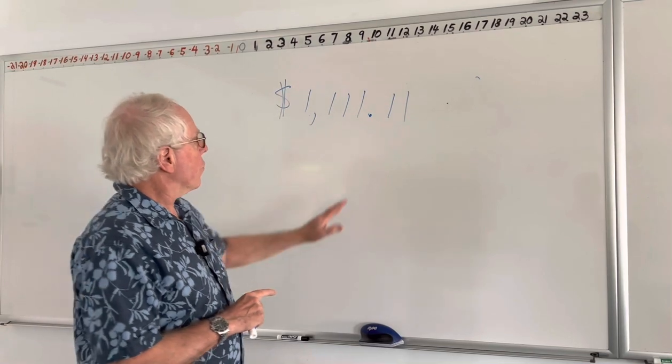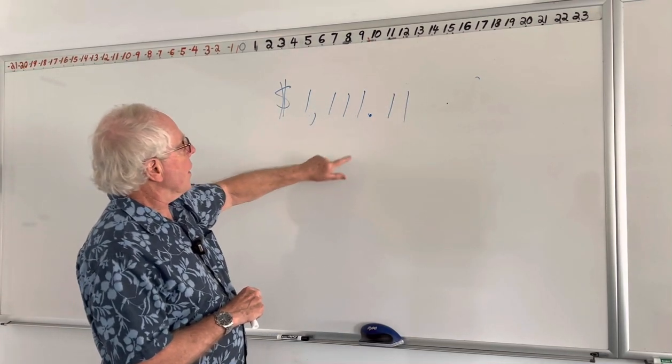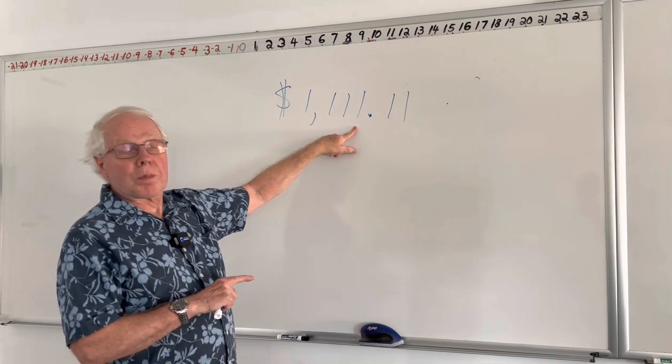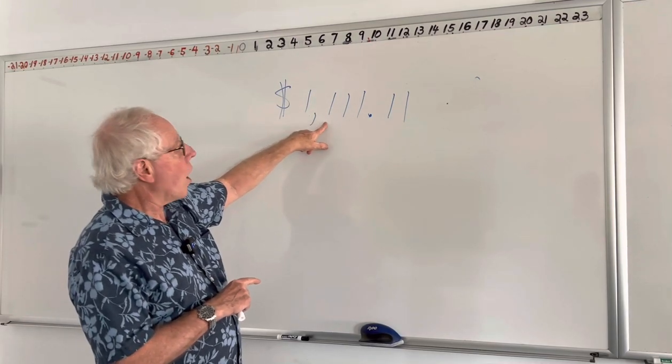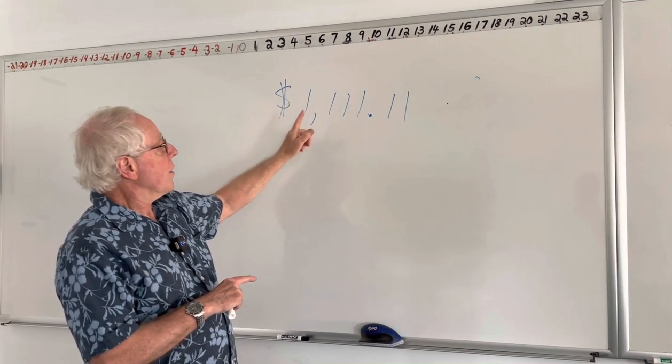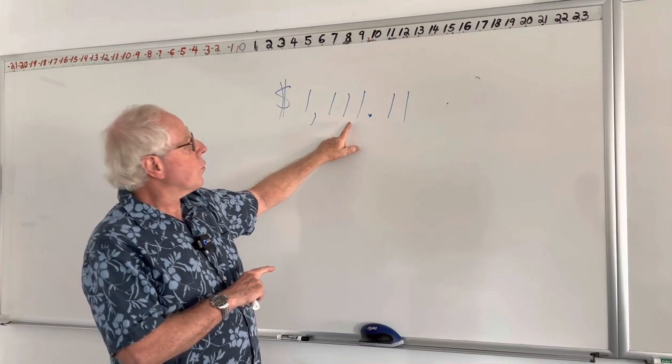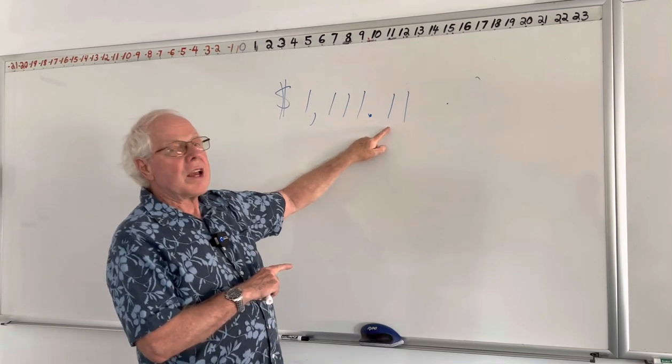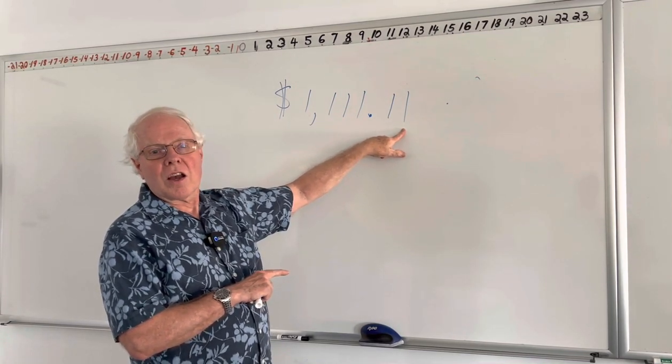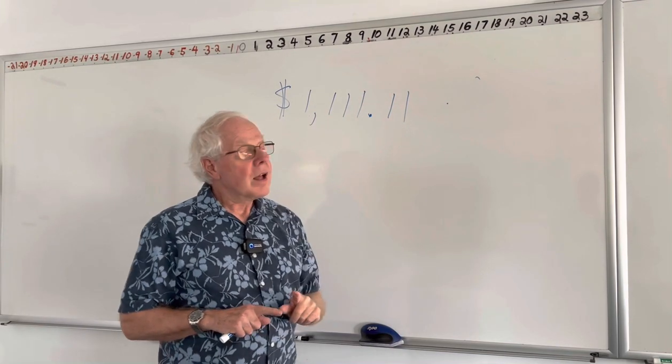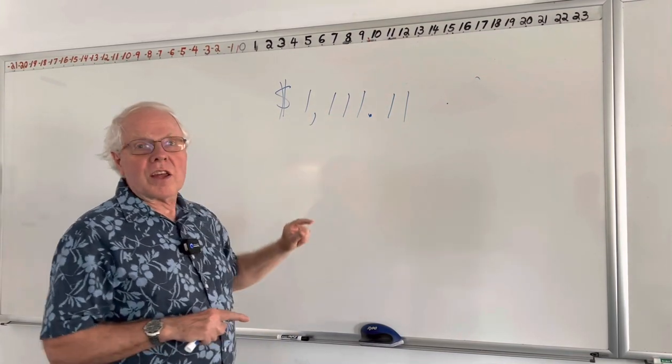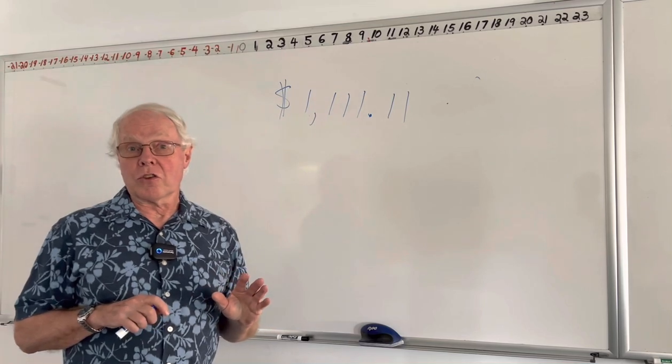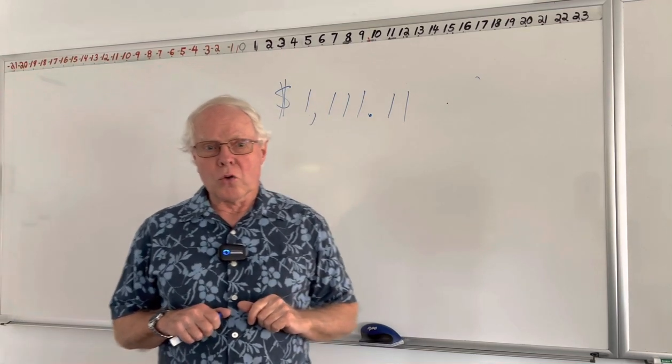So let's talk about these places. Forget about the cents for the time being. As we just indicated, this is the ones place or the units place. This is the tens place, the hundreds and the thousands. These also can be called digits. The units digit, the tens digit, the hundreds digit, and the thousandths digit. Over here, this is the tenths digit, and this is the hundredths digit. It's interesting because we call each of these digits and our fingers are also called digits. The Roman word for digit is digitus, which means toes or fingers.